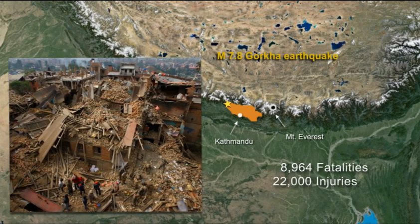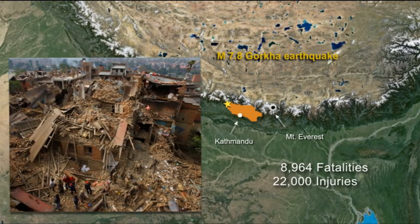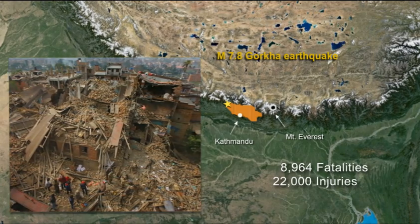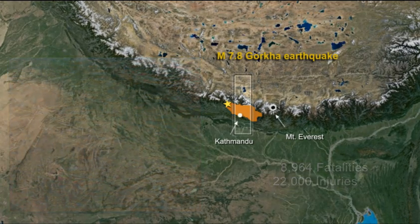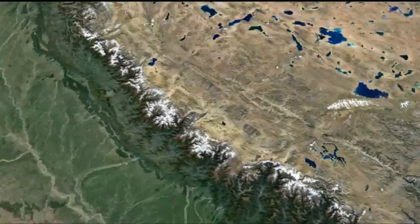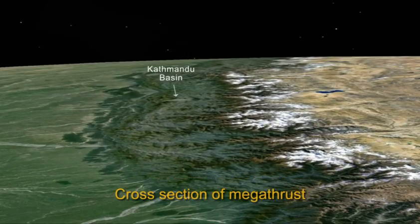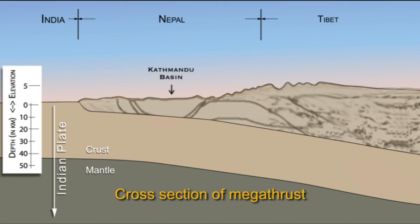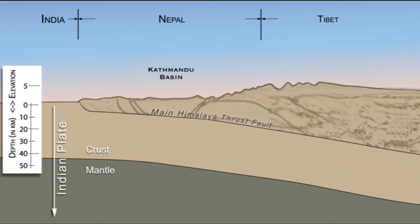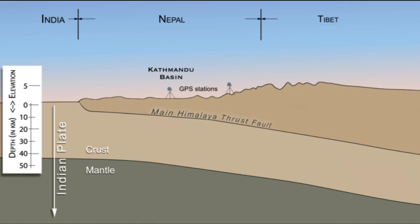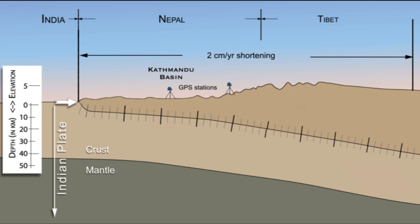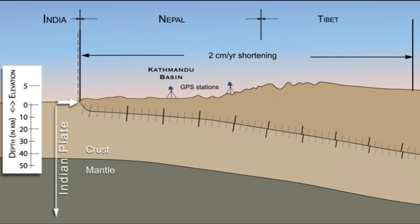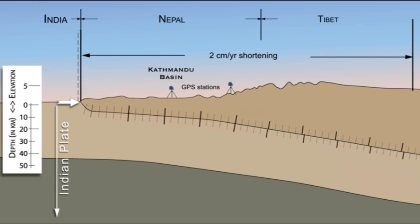To understand the Gorkha earthquake, let's look at a north-south oriented cross-section through the Kathmandu Basin. Geological studies and seismic imaging reveal a complicated history of faulting and earthquakes in the Himalayas, but here we focus on the active main Himalayan thrust fault. The Indian plate pushes the leading edge of the Eurasian plate northward, shortening the overriding crust by over 2 centimeters per year.